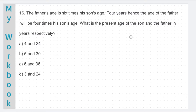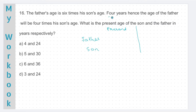Question number 16. The father's age is 6 times his son's age. 4 years hence, the age of the father will be 4 times his son's age. What is the present age of the son and the father in years respectively? There are two people here — father and his son — and there are two time periods: one is present and the other is 4 years hence. So let us assume the present age of the father to be x and the present age of the son to be y.